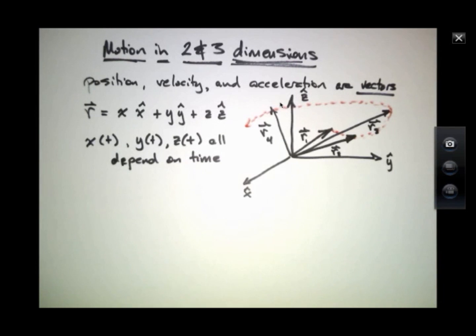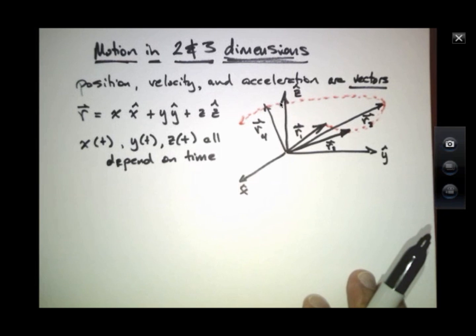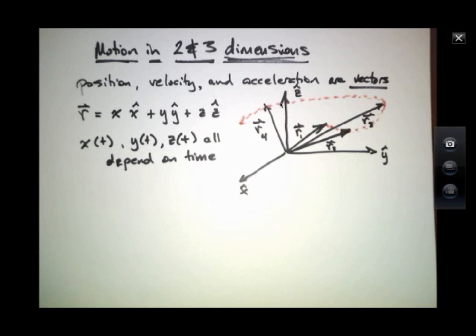The tip of this vector would be sweeping out some complex shape where each of these components is given by these separate functions, x of t, y of t, and z of t. This is what we mean by a position vector in a three-dimensional coordinate system.